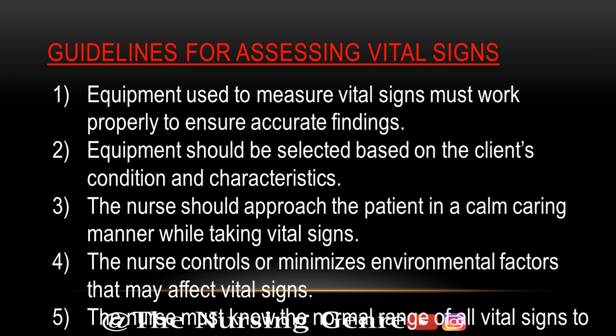The fifth guideline is: the nurse must know the normal range of all vital signs to detect accurately. The nurse will determine the normal range for temperature, pulse, respiration, and blood pressure, and check the patient's condition accordingly.